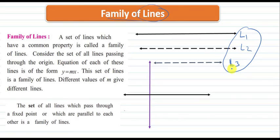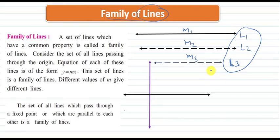So here line 1, line 2 and line 3 belong to a family, and this set of lines made up of these 3 lines is called family of lines. As these lines are parallel, their slope will be equal — slope 1, slope 2, slope 3 — so m1 equals m2 equals m3. These lines possess the property that their slope is equal, which means they are parallel.